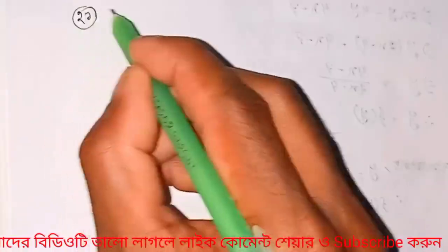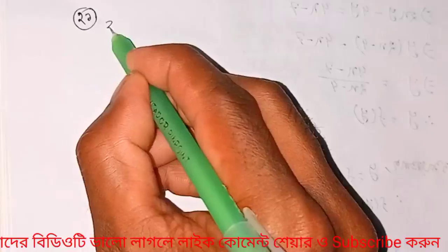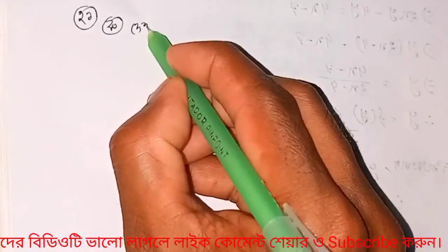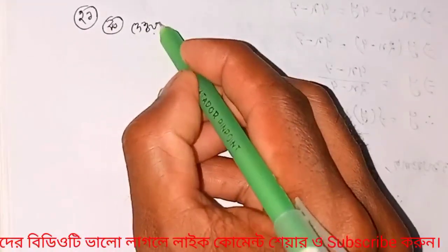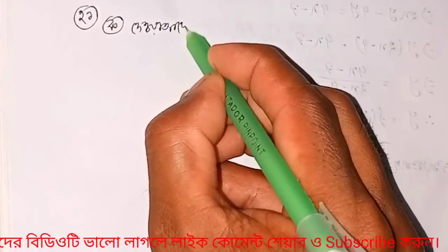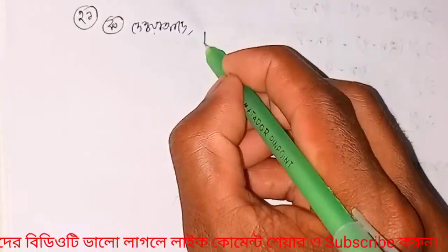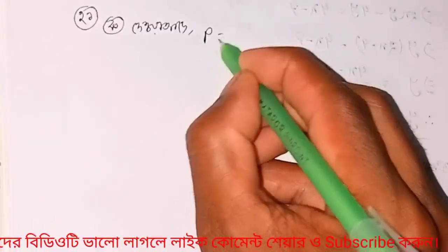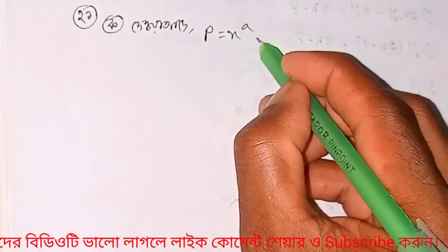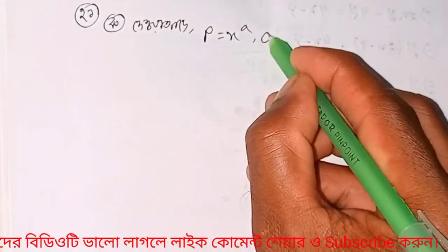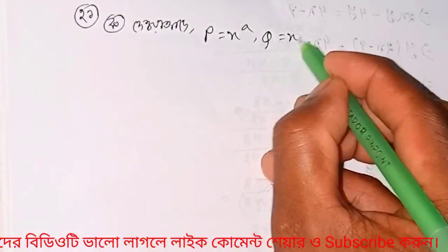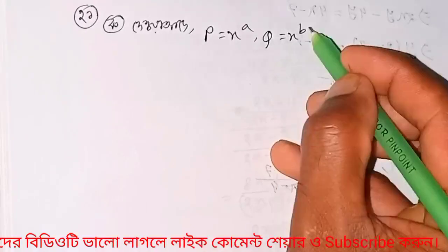A question. Q number D'A. Given P equal X to the power A, Q equal X to the power B.